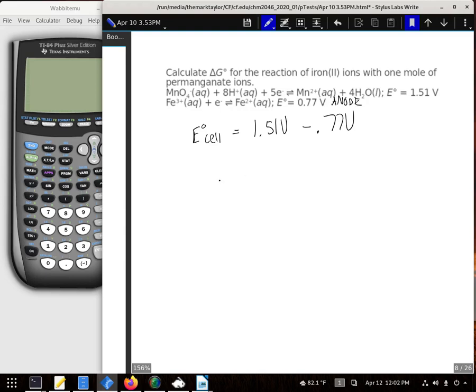That'll give us a spontaneous reaction. It is turning this into the anode. To actually solve for delta G, the equation we use is delta G equals negative nFE°.